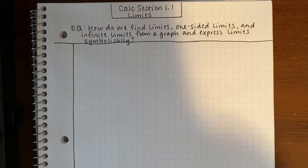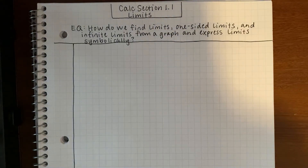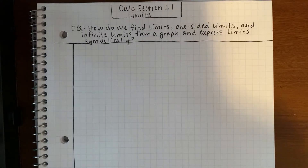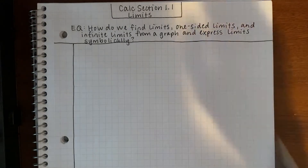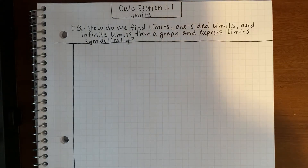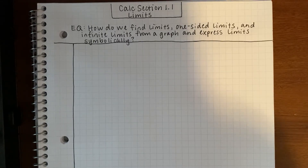We are back to our normal type of notes. I might also include links to Mr. Swanson's videos because the more resources the better, but I will be doing handwritten notes based on feedback for these next two chapters. Our first section is out of the calculus book — Calc Section 1.1, which is limits. Our essential question is: how do we find limits, one-sided limits, and infinite limits from a graph and express limits symbolically?